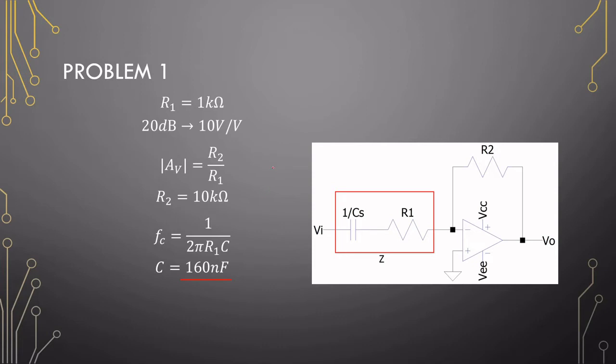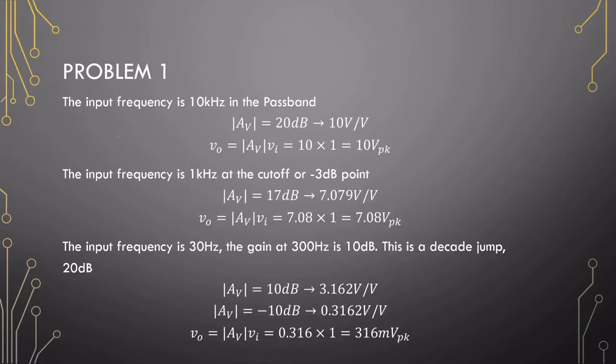Let's have a look at the output voltages. For a 10 kHz input we should be in the passband, so 1 volt multiplied by 10 volts per volt equals 10 volts peak. The second one is 1 kHz, that is our cutoff frequency, at minus 3 dB, so 17 dB, 0.707, and our output should be 7.08 volts peak.